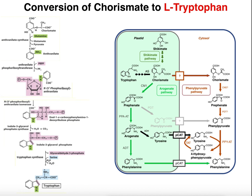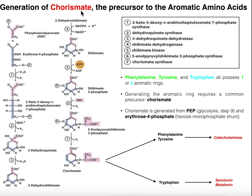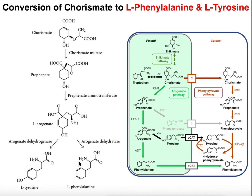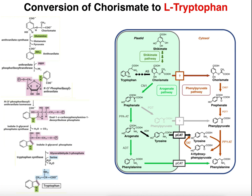So we've now seen the generation of chorismate, the conversion of chorismate to tyrosine and phenylalanine, and now the conversion of chorismate to tryptophan. Keep in mind this process occurs not in humans but mostly in plants and bacteria, usually in an organelle referred to as the plastid. The tryptophan can also be transported out into the cytosol, where ribosomes will be and protein synthesis will occur. Please make sure to like this video and subscribe to the channel for future videos and notifications. Thank you.